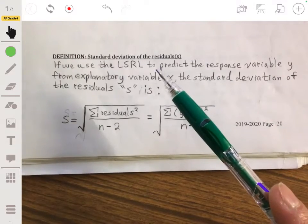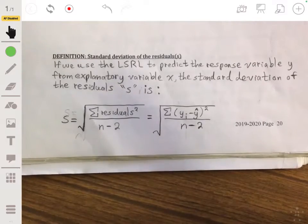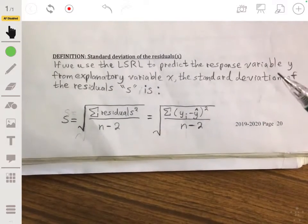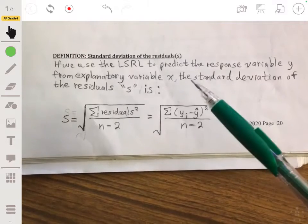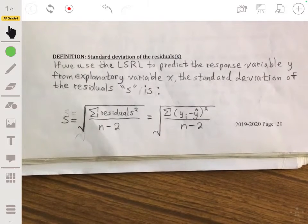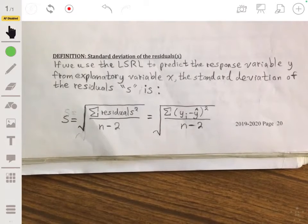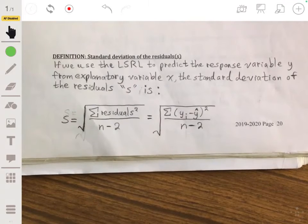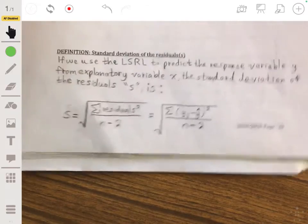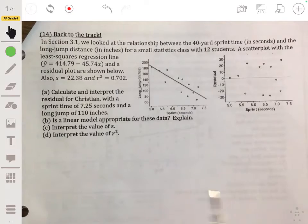Because remember, we're using a least squares regression line to make predictions of what y would be based on the x values. Now, as we know, the least squares regression line is not going to give you perfect answers. It's not going to give you perfect predictions. Your predictions aren't going to be exact, so there's going to be some sort of error, some sort of deviation or residual. It's basically saying, what's the average residual, what's the average distance that your predictions will be off from the least squares regression line?